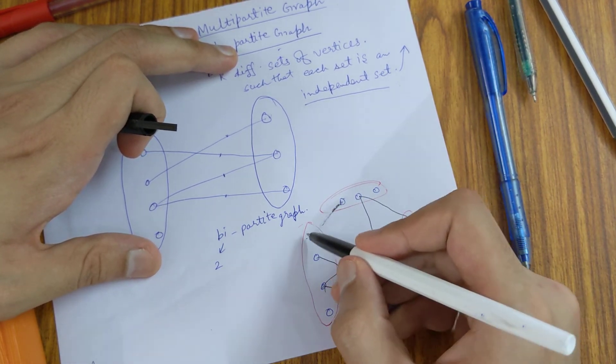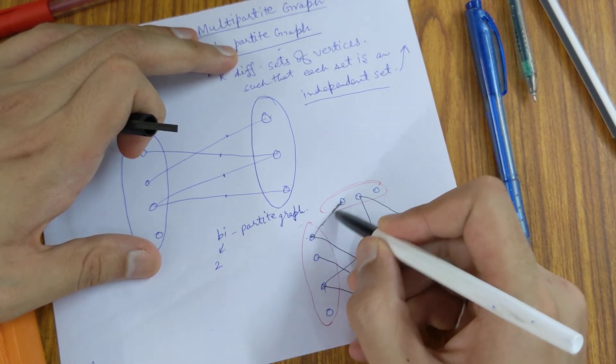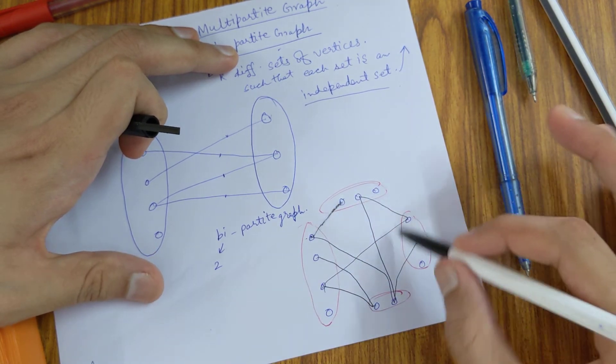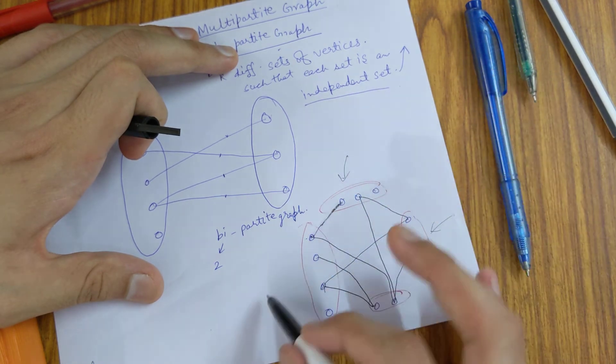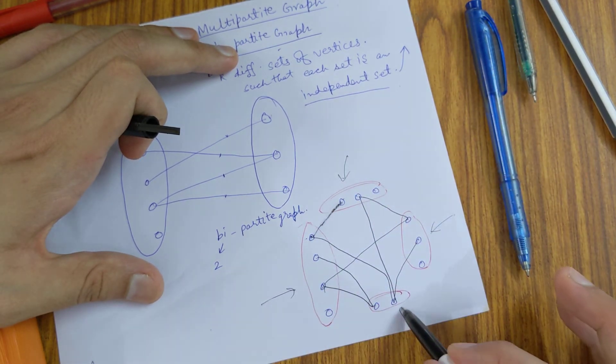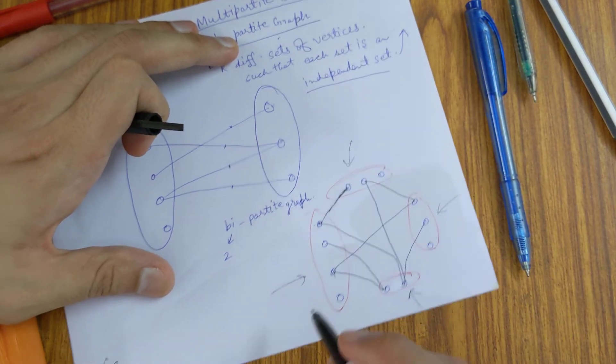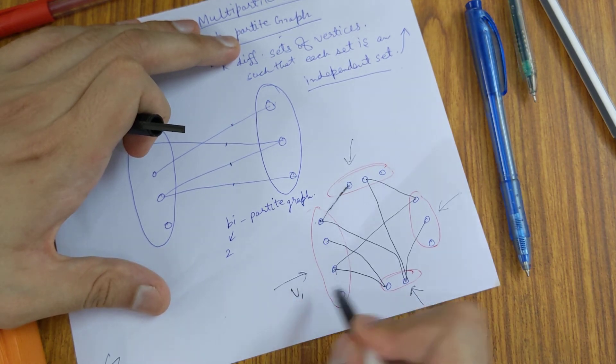this is basically an edge. Basically, this is an independent set, this is an independent set, this is an independent set, and this is the fourth independent set.